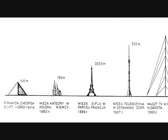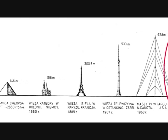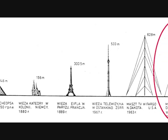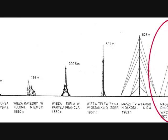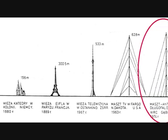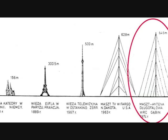As you can see in the picture, the Barso Radio Tower was the world's tallest land-based structure at that time — more than twice as tall as the Eiffel Tower.